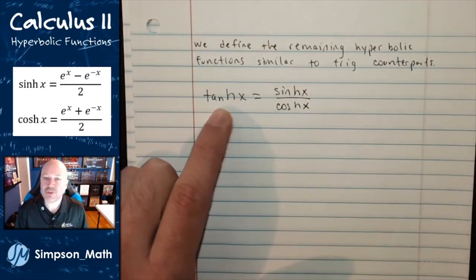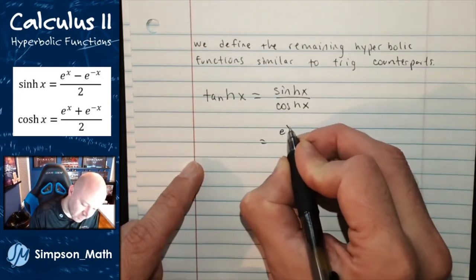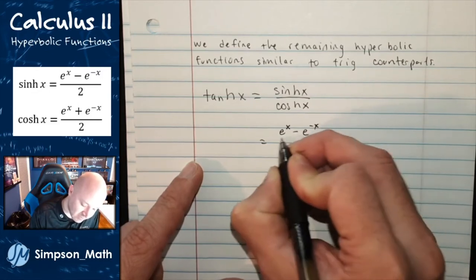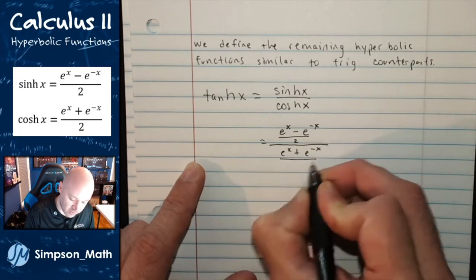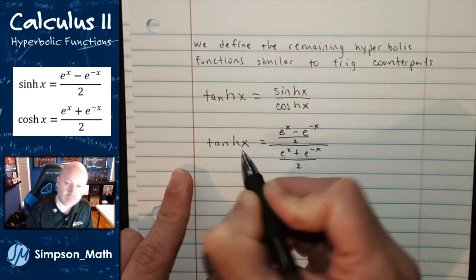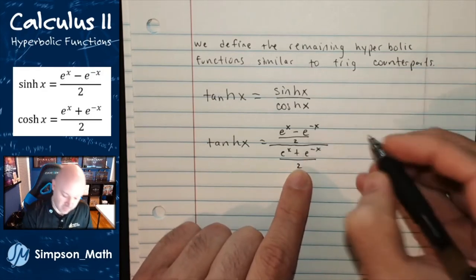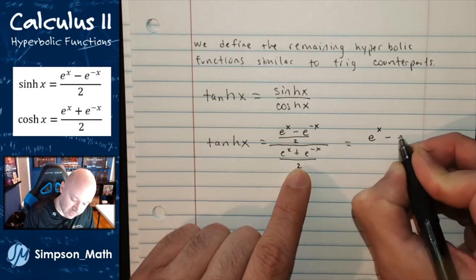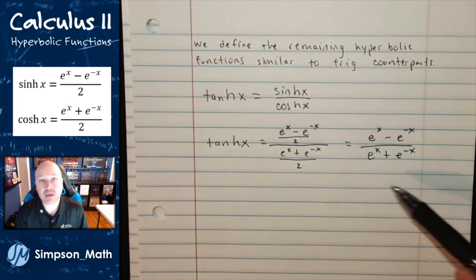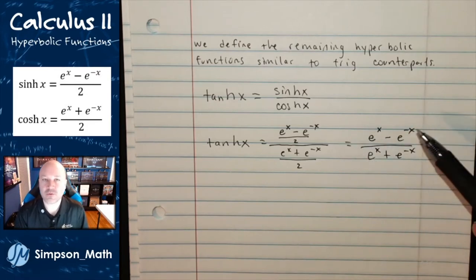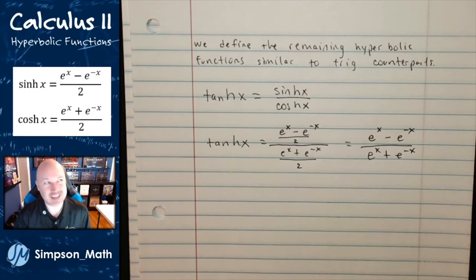We can find it using the definitions. Hyperbolic sine is e to the x minus e to the negative x over 2, divided by cosh, which is e to the x plus e to the negative x over 2. I can multiply by 2 over 2 to reduce those 2s, leaving me with e to the x minus e to the negative x in the numerator and the sum in the denominator. If you needed cosecant, you would just take the reciprocal of sine — so hyperbolic cosecant is just the reciprocal of hyperbolic sine.